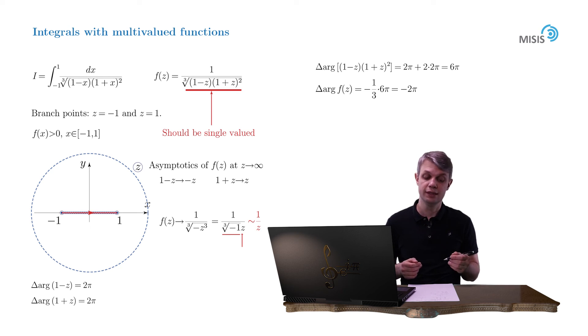The integration contour can't run inside the branch cut, because the multivalued function is ill-defined inside the branch cut, as we discussed last week. So we have two options. Either we understand the integral as the one taken along the contour slightly above the branch cut, or slightly below.